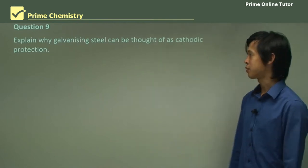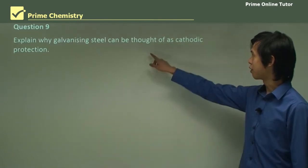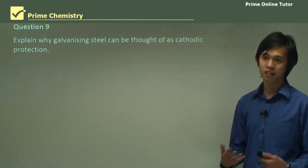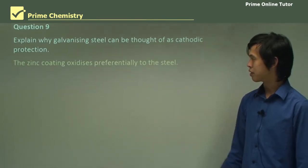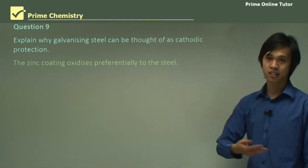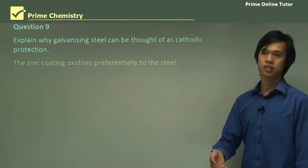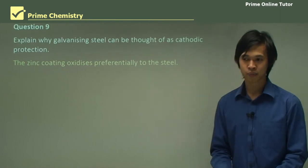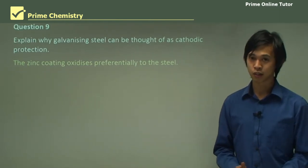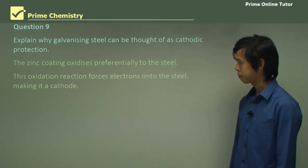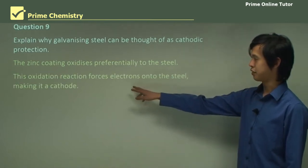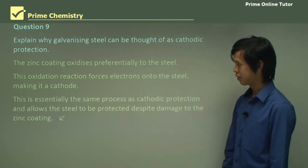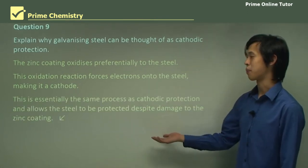Explain why galvanizing steel can be thought of as cathodic protection. The zinc coating oxidizes preferentially to the steel — that's exactly what cathodic protection is: a material oxidizing preferentially, forcing the steel we want to protect to become the cathode. This oxidation forces electrons onto the steel, making it a cathode. That's the same process as cathodic protection, and it allows the steel to be protected even if there's damage to the zinc coating.